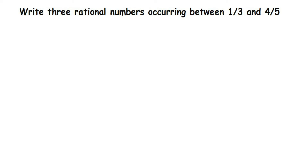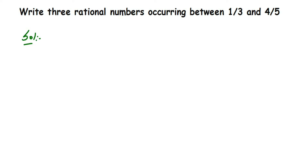Here is a question on rational numbers, and this type of question is really important for two or three marks. The question is: write three rational numbers occurring between one by three and four by five. Whenever we solve this type of question, we have to make sure that the denominators are the same. One more important thing is there are infinite rational numbers between two given rational numbers.